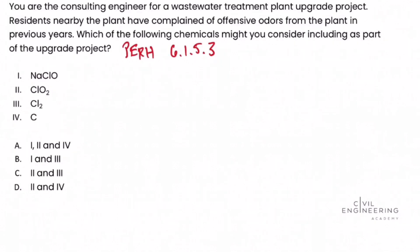We're going to look at each of the four compounds given in the problem statement, look them up in the table to determine the common application, and see which ones we would use to reduce or eliminate the offensive odors. Let's start with the first one: NaClO, sodium hypochlorite. If we look it up in the table, we see that its purpose is disinfection.